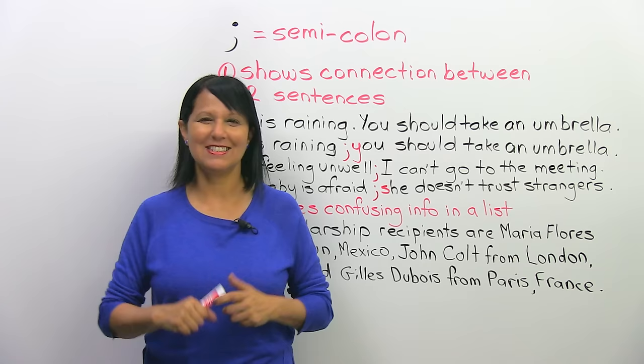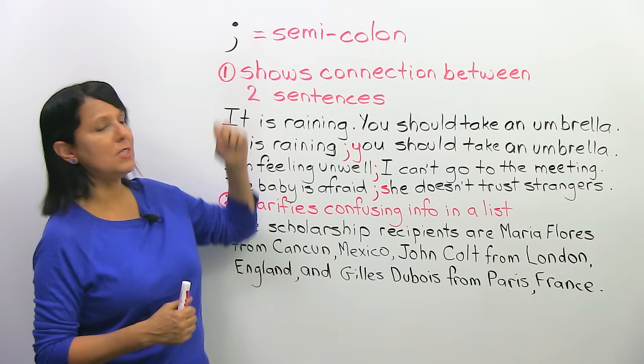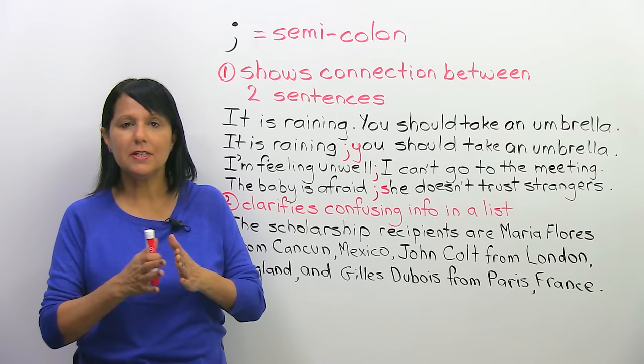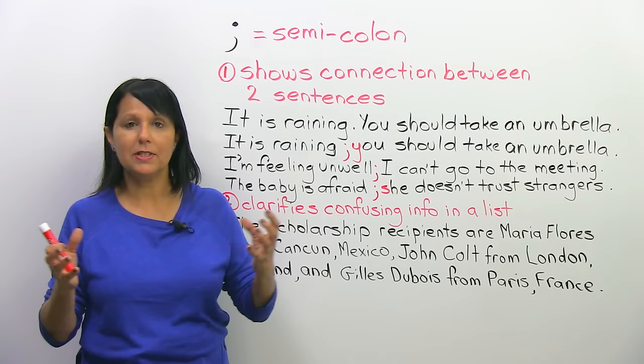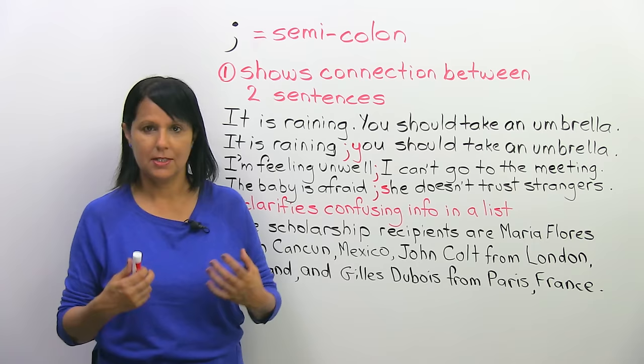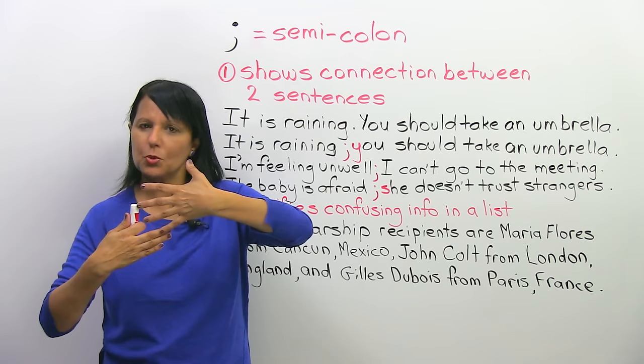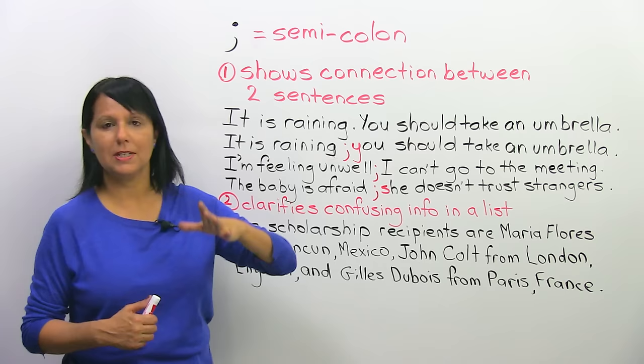The most important thing about the semi-colon is that it links ideas. What is the difference between using a period and using a semi-colon? A period divides ideas and sentences, while a semi-colon links or connects ideas, thoughts, and sentences. That's the most important purpose of the semi-colon — to show that we have one sentence, then a second sentence, but this second sentence is connected to the first. We show that by using a semi-colon in the middle.